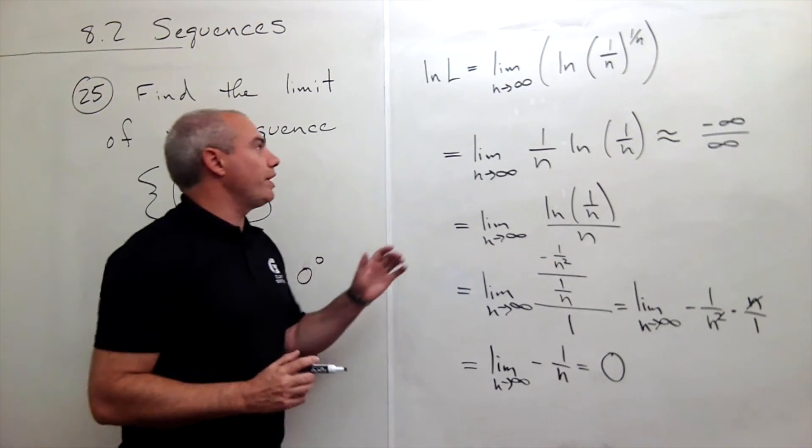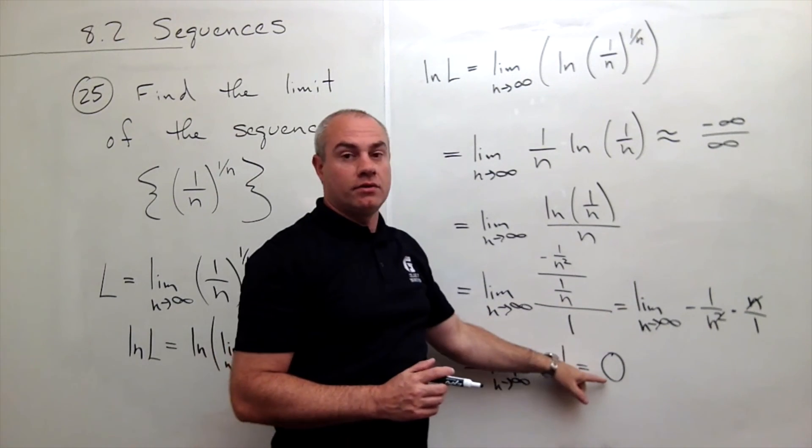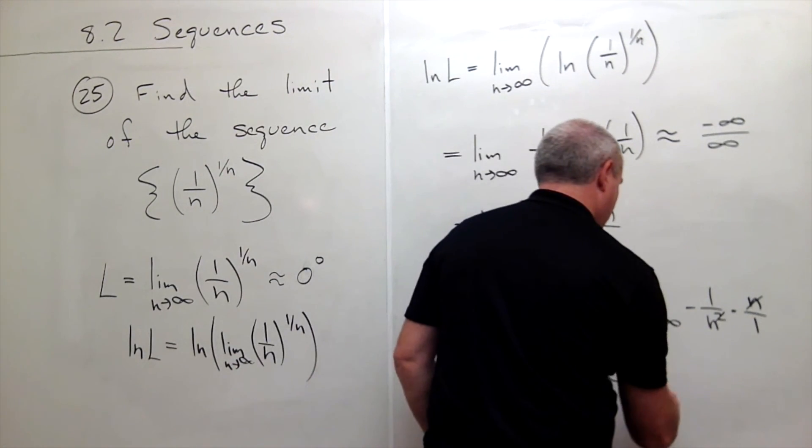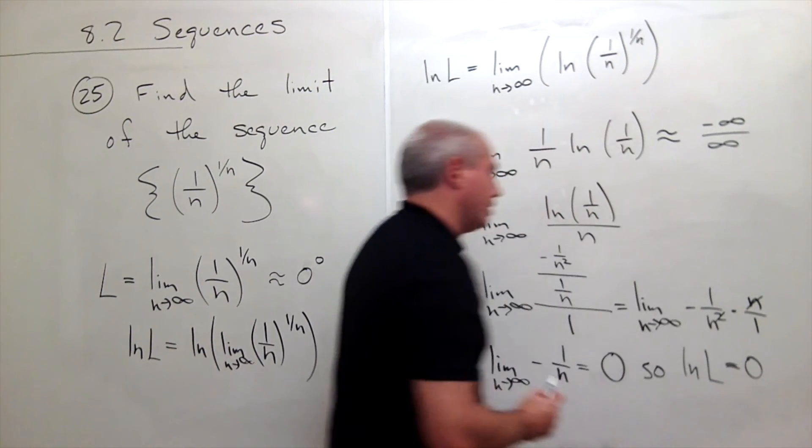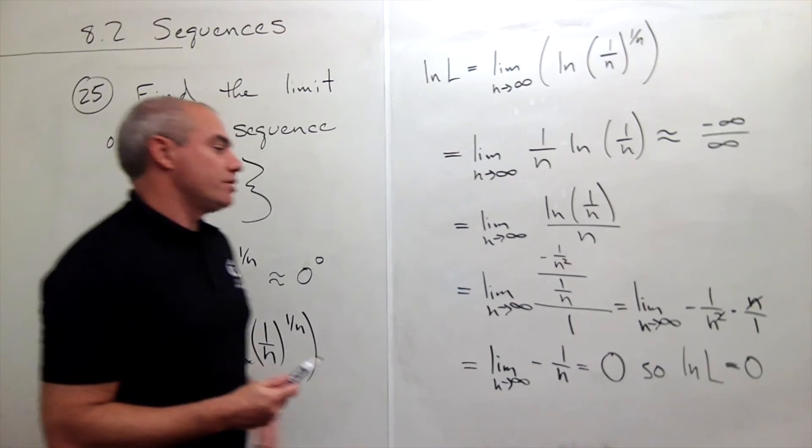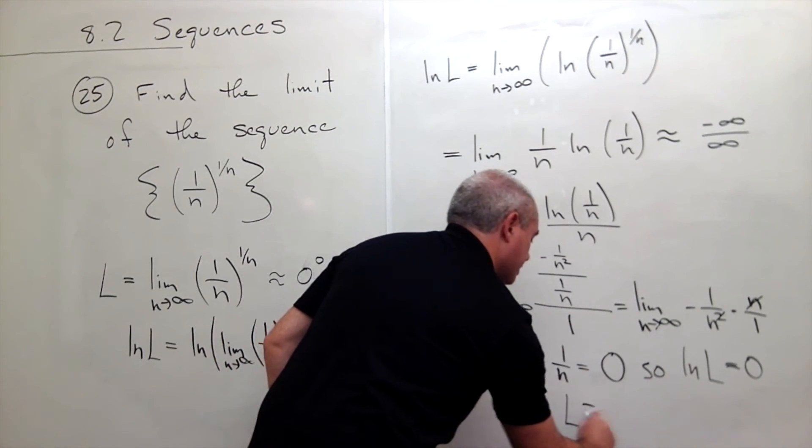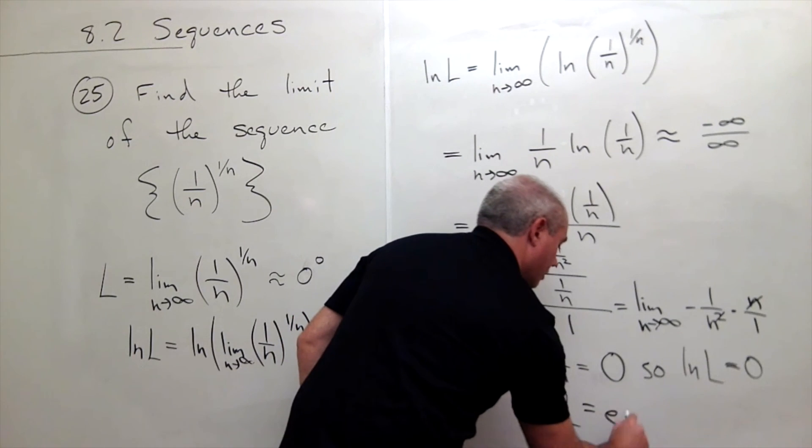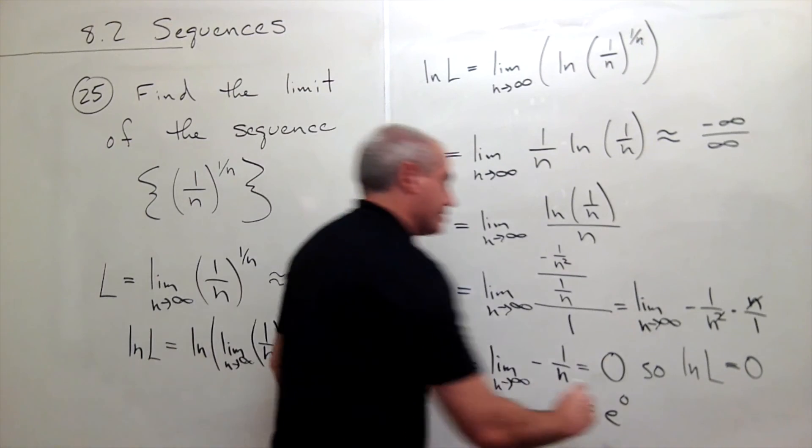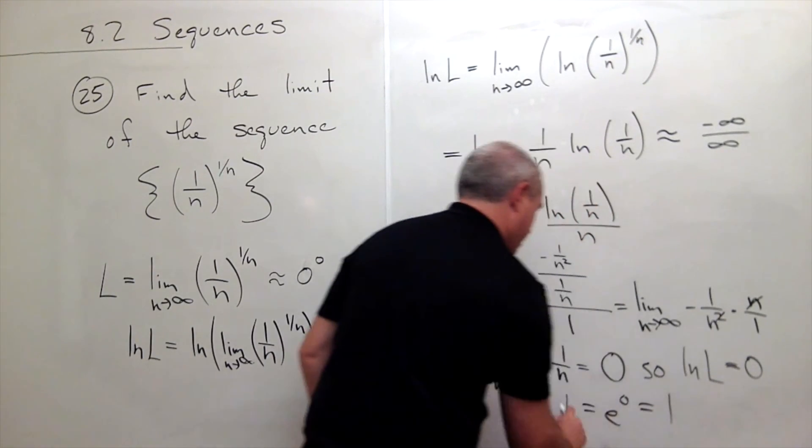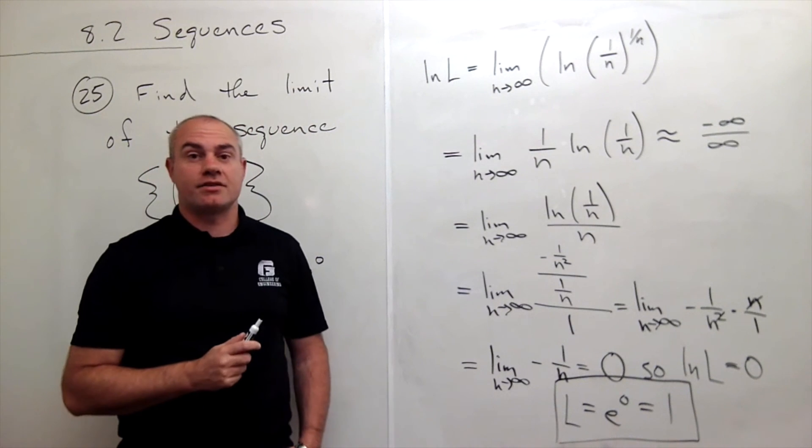So what do we have here? We have that ln of L is 0. So ln of L equals 0. And so what's the answer here? So L must be, so L is equal to e raised to the 0 power. And e to the 0 power is otherwise known as 1. So the answer, the limit in this case is 1.